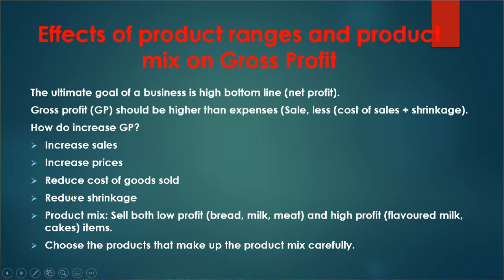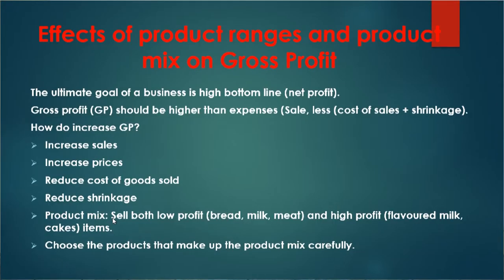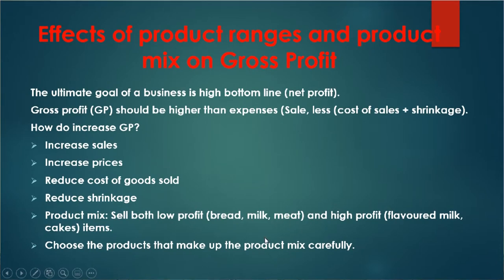Another way of ensuring a high gross profit is to reduce shrinkage. Shrinkage is all about loss of stock — stock that is unaccounted for. We must be able to account for all the stock we have in the shop, and ensure that all points where we can lose stock are closed or thoroughly checked so that losses are reduced. Then the other way of increasing gross profit is through how our product mix and product range are structured — you must sell both low profit and high profit margin items. For example, low profit items might be bread, milk, and meat.